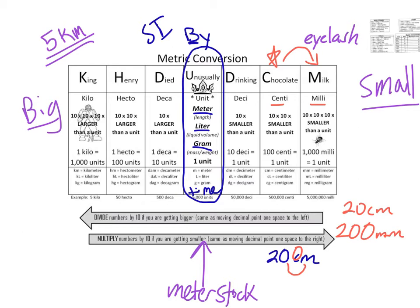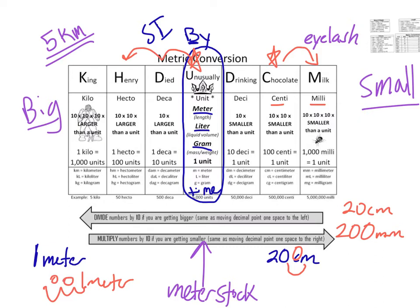Here's another example. If I have one meter and I need to go to hectometers — I'm here in meters and I need to go two steps over to hectometers. I'm going to take that one meter, and there's a decimal here. I'm going to move it to the left two places and fill in the zeros. So I've gone from one meter to 0.01 hectometers.